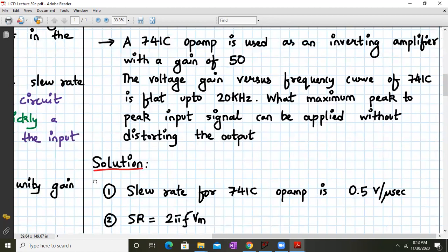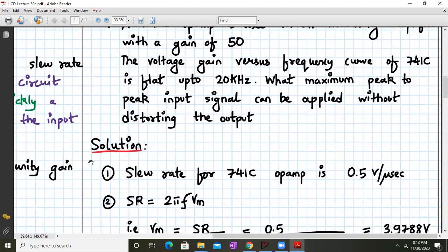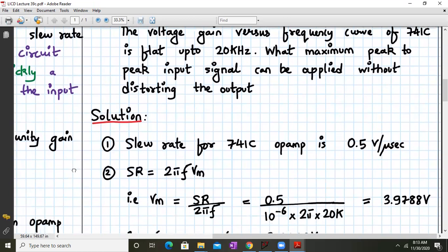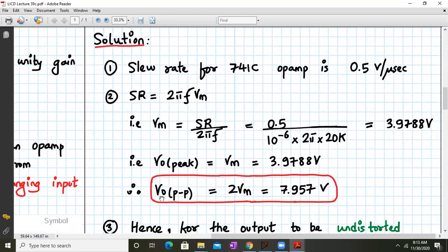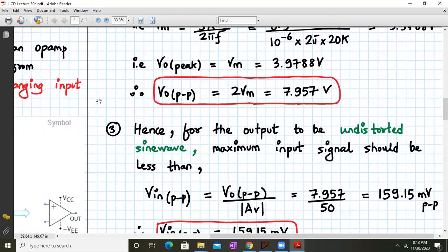Okay. So how do we approach such type of numerical? First of all, we write the given data that your 741 is mentioned. So for 741 the slew rate is 0.5 volts per microsecond. And secondly, the formula for slew rate is SR equals 2 pi F into Vm. So Vm will be slew rate upon 2 pi F. That will be 0.5 divided by 10 to the 6. In the denominator, we have two more terms 2 pi into 20k. So I'm sure if you work it out in a calculator, you will get a number close to 3.9788 volts.